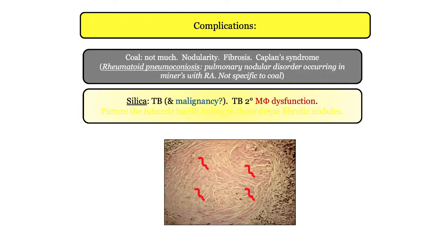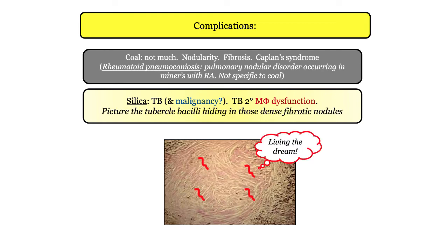Moving on to silicosis: the patient with silicosis is predisposed to tuberculosis. There is a questionable association with malignancy, but anything questionable is not fodder for the USMLE. Insofar as tuberculosis, they are fond of the pathologic basis — it appears related to macrophage dysfunction. The macrophage that is busy consuming silica particles doesn't do well with the tubercle bacilli.